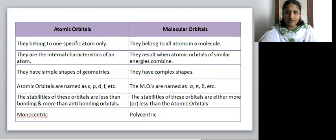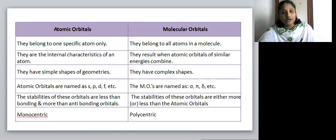Coming to the comparison between atomic and molecular orbitals. Atomic orbital belong to only one specific atom and they are the internal characteristics of an atom. Whereas molecular orbital belong to all atoms in a molecule and they result when atomic orbitals of similar energies combine together. Atomic orbitals have simple shapes of geometry and are named as s, p, d, f, etc. Whereas molecular orbitals have complex shapes and are designated as σ, π, δ, etc. The stability of atomic orbitals are less than the bonding and more than the antibonding orbitals. Whereas the stability of molecular orbitals are either more or less than the atomic orbitals. Atomic orbitals are monocentric, whereas molecular orbitals are polycentric.